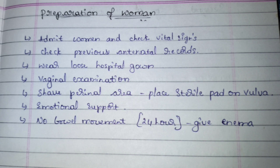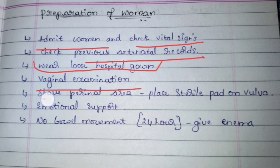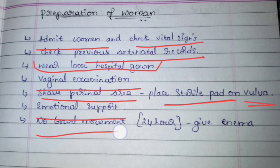Preparation of the woman: when the woman comes to the hospital, first admit her and check vital signs. Ask her relatives to provide previous antenatal records. Provide the hospital gown — the dark green color gown. Perform vaginal examination, then shave the perineal area (the vulva), and place a sterile pad over it to manage discharge. Provide emotional support as every woman has anxiety during labor. Check for bowel movement; if there is constipation, provide an enema.